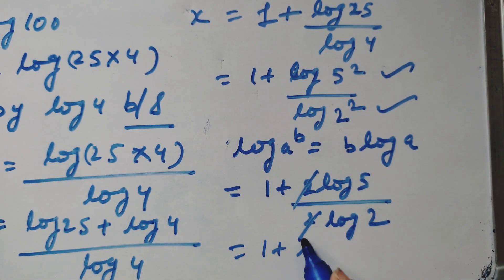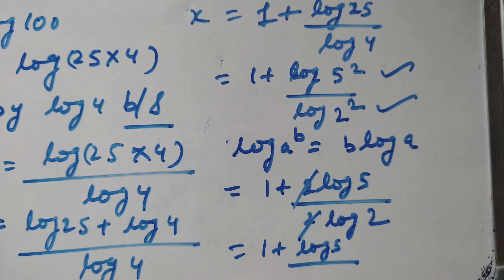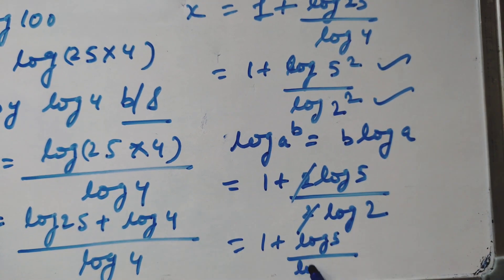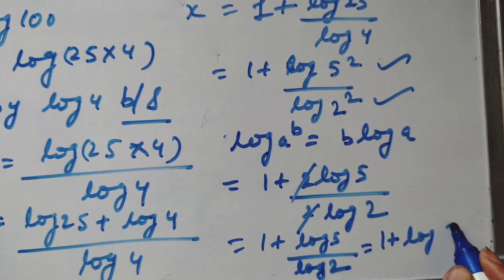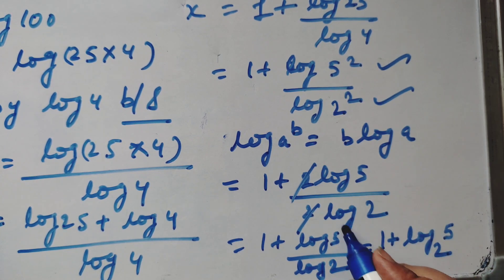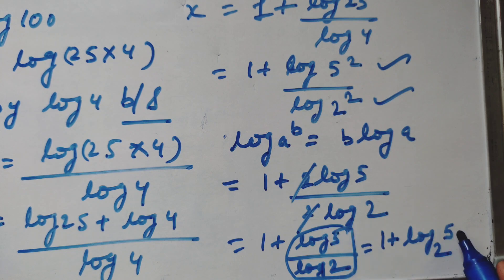So what remains is 1 plus log 5 upon log 2. We can write this as 1 plus log 5 base 2, using the change-of-base rule. This is our final answer — this is the value of x.